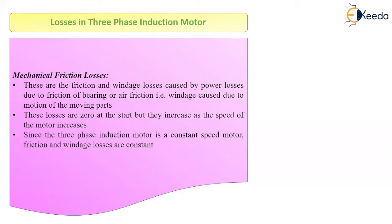Since the 3-phase induction motor is almost a constant speed motor, the friction and windage losses are constant — because these losses increase with speed, and since the speed is nearly constant, the losses remain constant. They are zero only at start, but under running conditions the losses remain constant. So both iron loss and mechanical loss are constant at all conditions, which is why they are called constant losses.